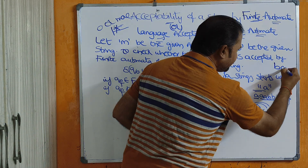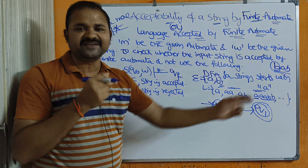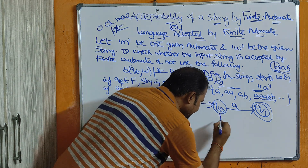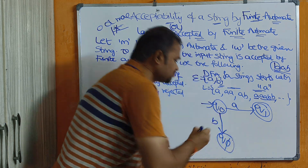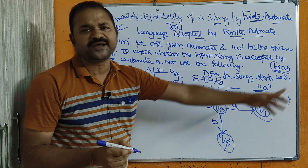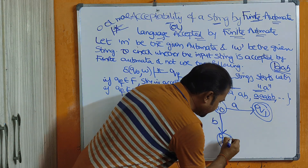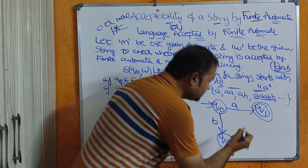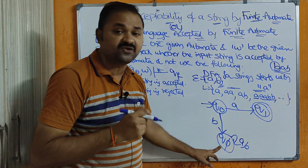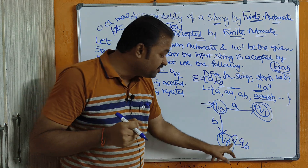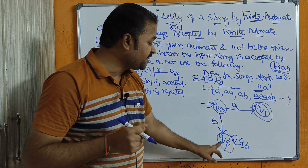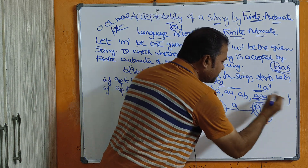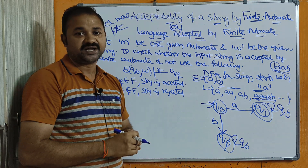If a string starts with 'b', such as 'bab', it is not valid and must be rejected. For this purpose we introduce a dead state, q_pi. From the dead state there are no transitions to other states. So applying 'b' on q-naught leads to q_pi, and any further input on q_pi stays at q_pi. For q1, since any number of a's and b's are allowed after the initial 'a', we add a self-loop.